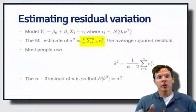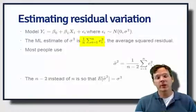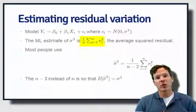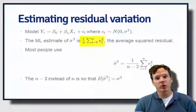So the sum of the squared residuals times 1 over n is an estimate of sigma squared, the variation around the regression line, the true population variation around the regression line.